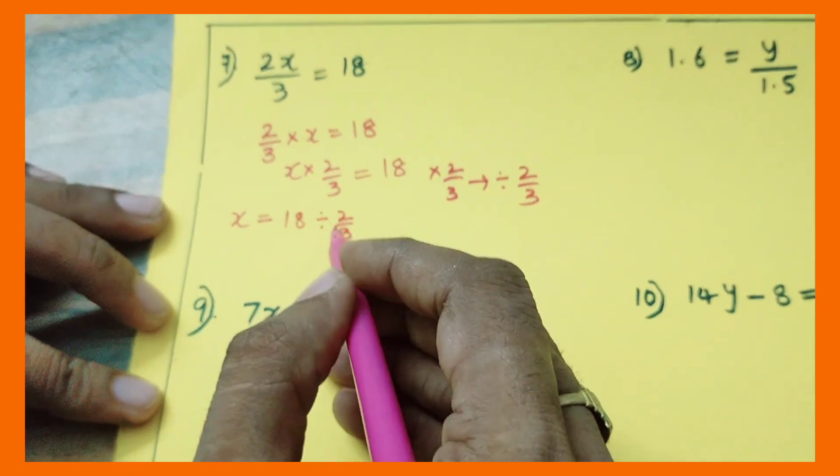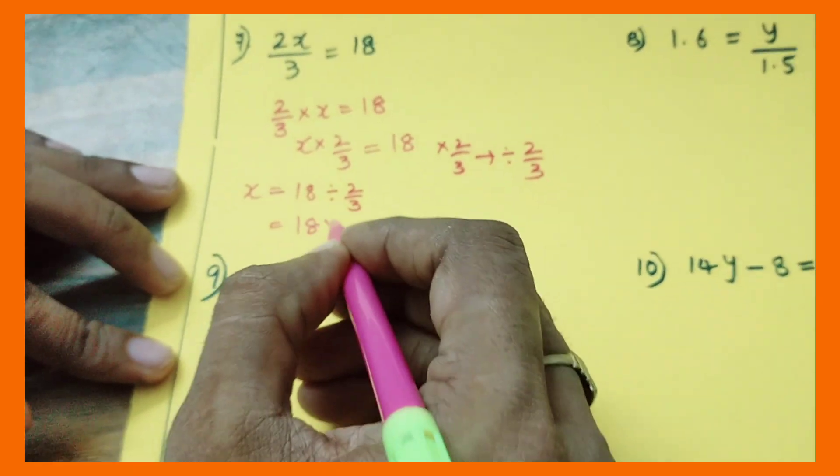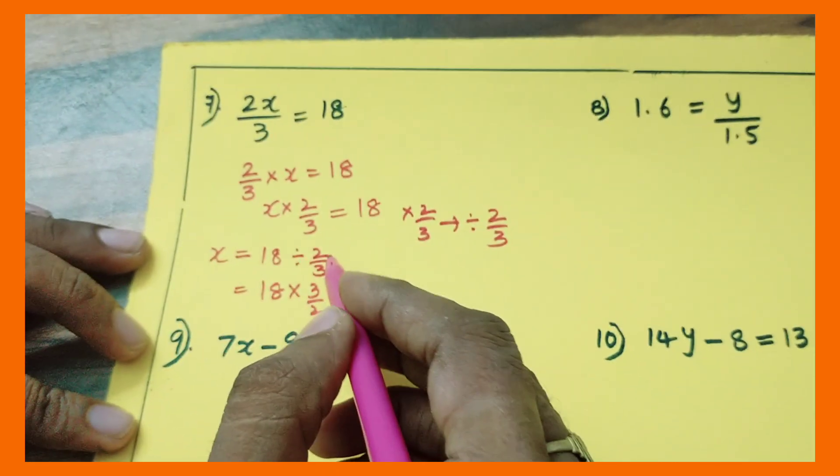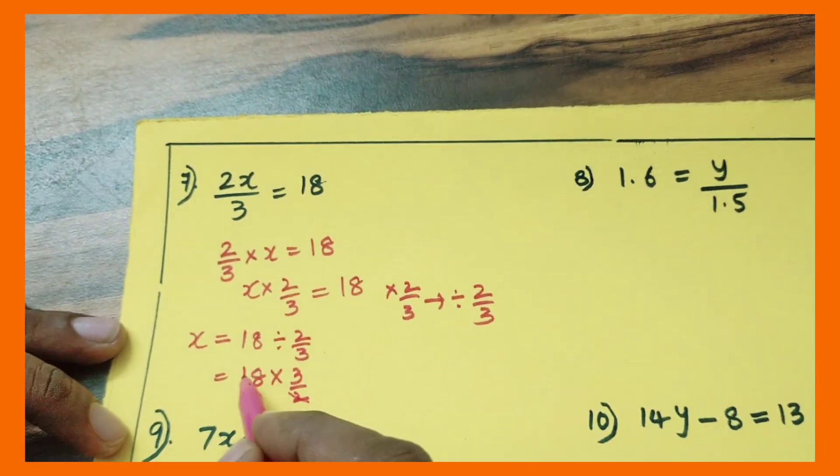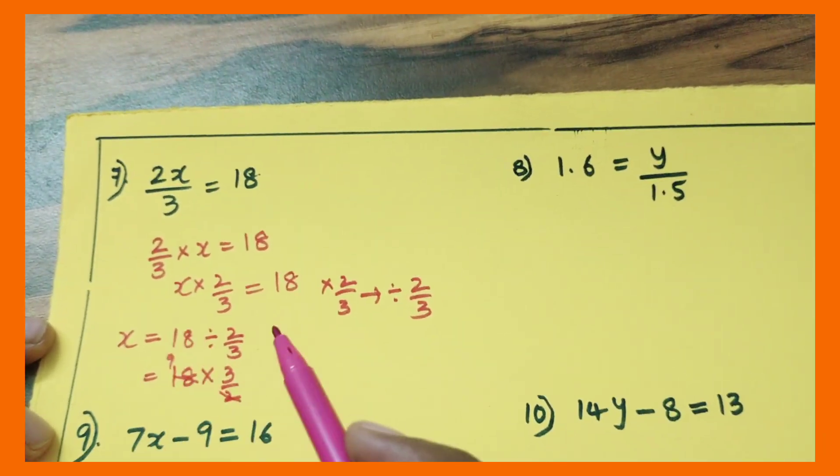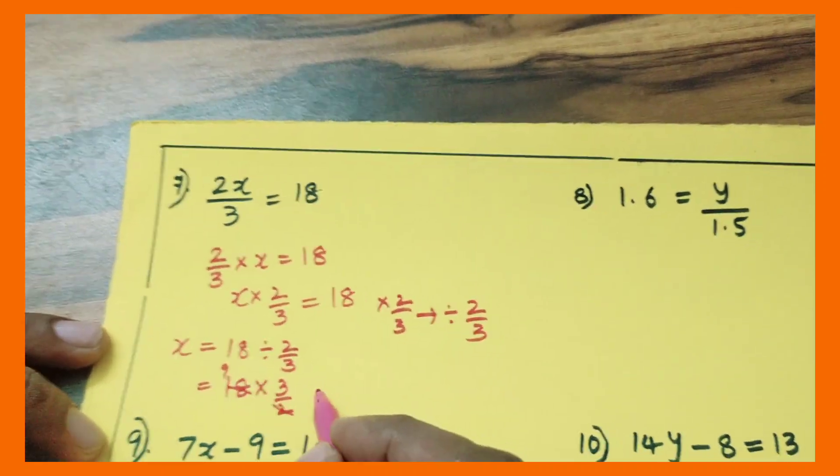Already you know that this is a reciprocal - it is going to become 18 into 3 by 2, reciprocal of 2 by 3. So it is going to multiply this 18, and 2 times 9 is equal to 18. 9 into 3 is equal to...